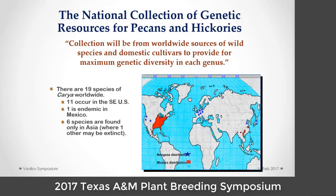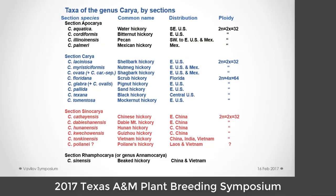The National Collection is mandated to represent worldwide sources of wild species to represent genetic diversity. There are 19 species of Carya worldwide. Eleven are in the southeastern United States, which is according to Steven Manchester the center of diversity. Six species are found only in Asia, where one may already be extinct. We have a fairly good collection of those, though we are underrepresented in some species.